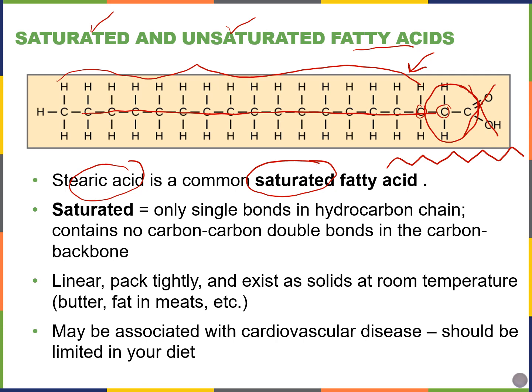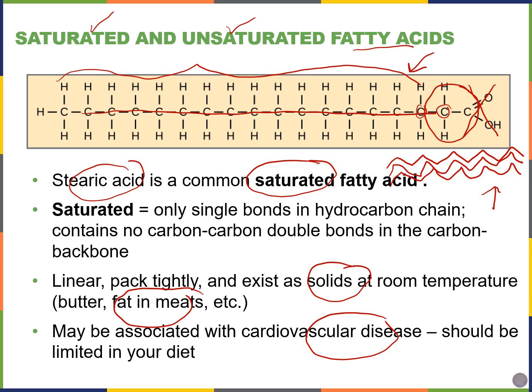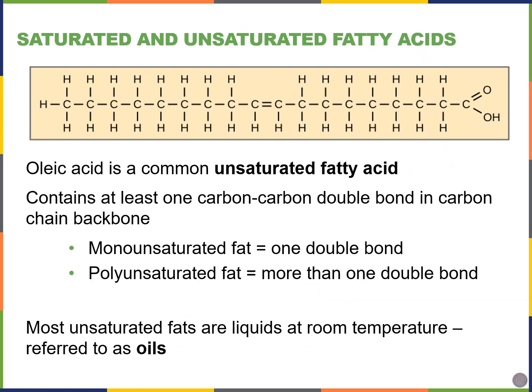Saturated fatty acids tend to be fairly linear in shape, so they pack tightly together and are solid at room temperature — like butter, fats in meat. They're more rigid and tend to be associated with cardiovascular disease because they're harder to break down and can accumulate in blood vessels and cause problems.